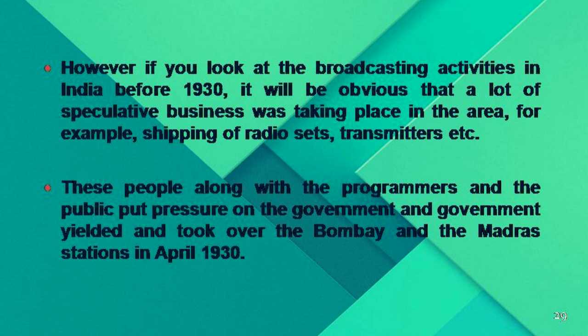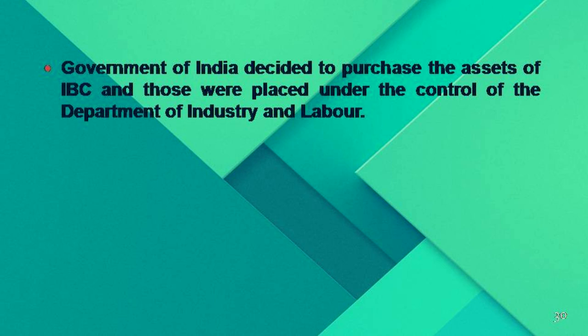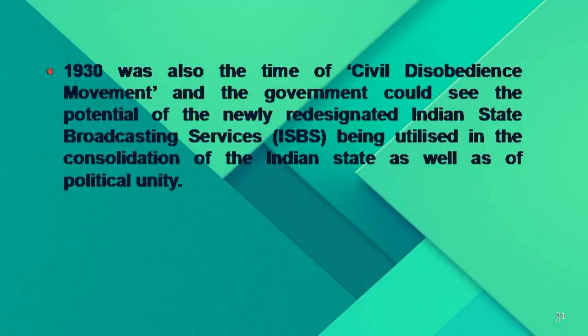Looking at broadcasting activities in India before 1930, a lot of speculative business was taking place, such as the shipping of radio sets and transmitters. Public pressure led the government to take over the Bombay and Madras stations in April 1930, with assets placed under the Department of Industry and Labour. During the 1930 civil disobedience movement, the government could see the potential of the newly designated Indian State Broadcasting Services, ISBS, in consolidating the Indian state and political unity.